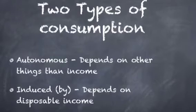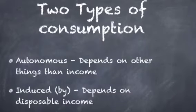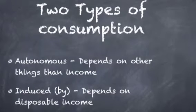Autonomous consumption can depend on things such as the weather. So people consume more when there's hotter weather, they consume more ice cream for example.